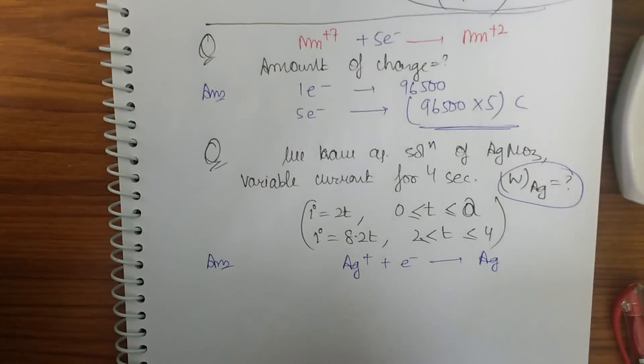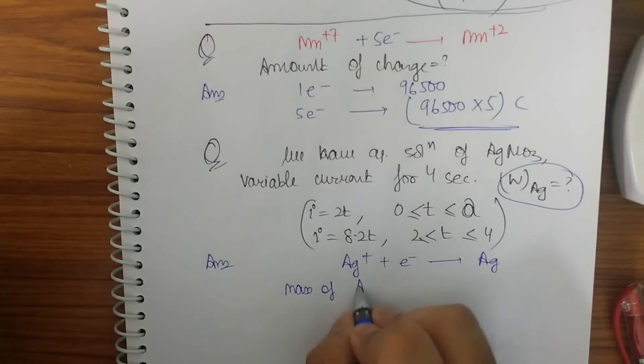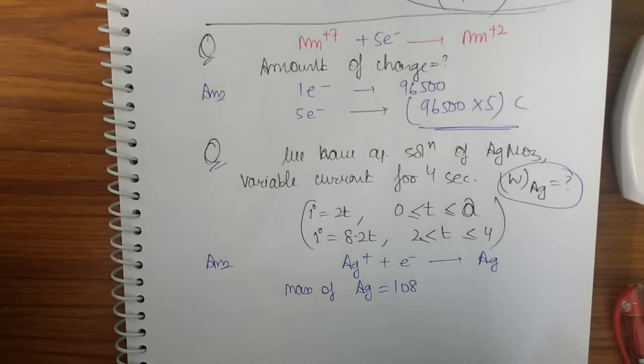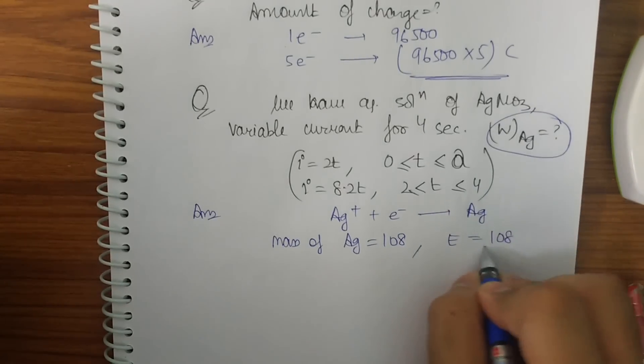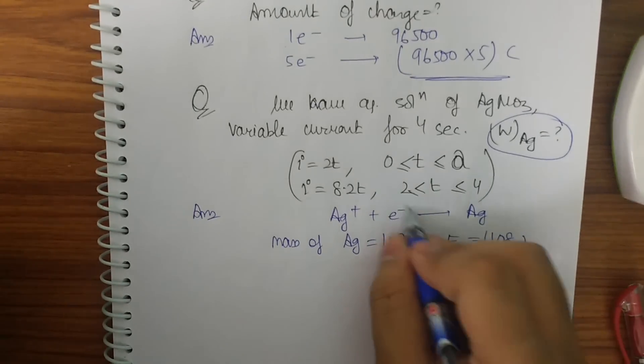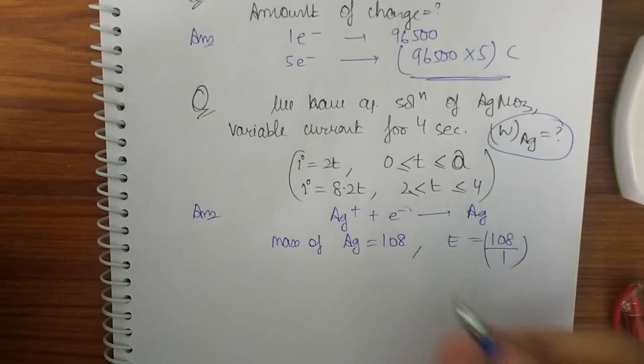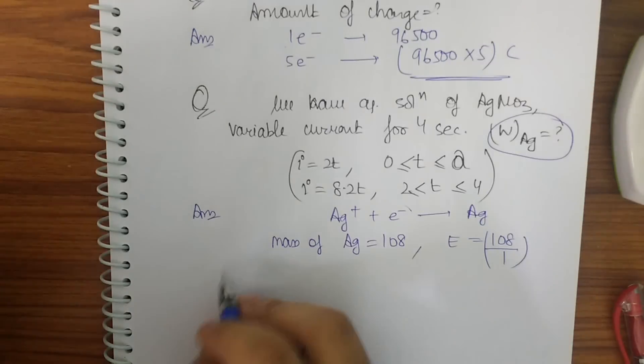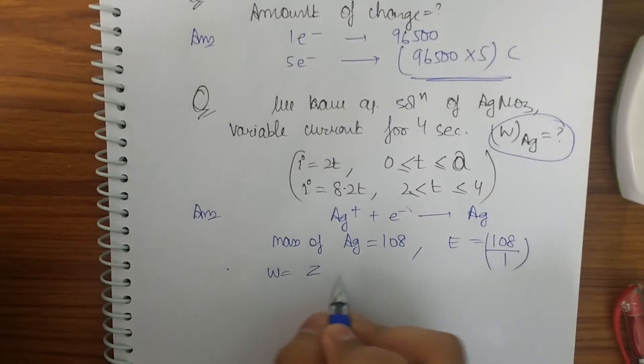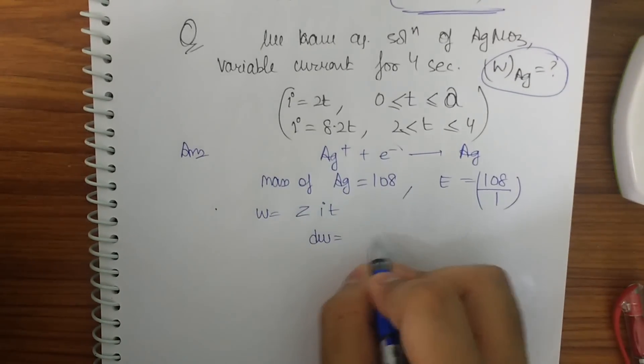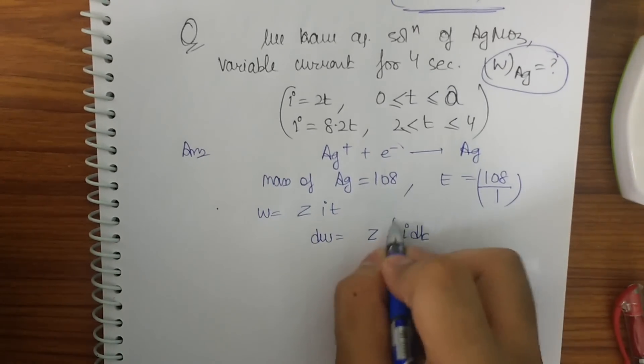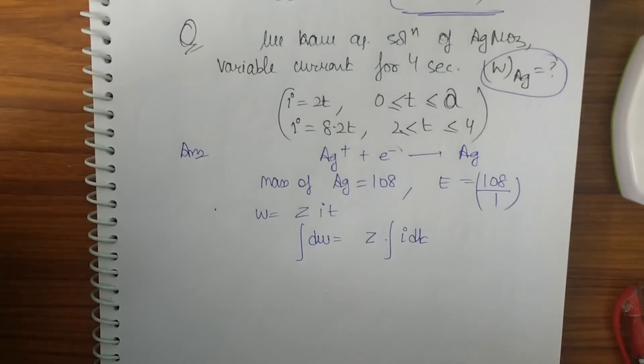So first of all let us write the equation for it. We know that Ag plus plus electron will give me Ag. So basically I will be having N factor to 1 and the mass of silver, molar mass of silver is equal to 108. So what I get from it is that the equivalent weight will be 108 upon 1 while N factor is 1 because only 1 electron is transferred. So now let us get along with what to do with the current that is given.